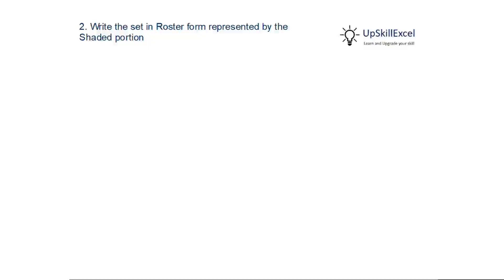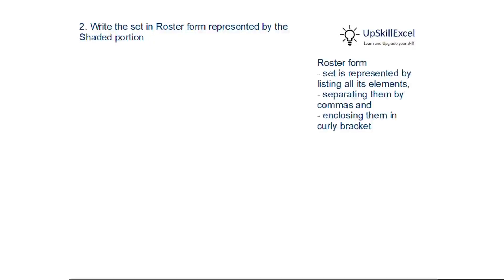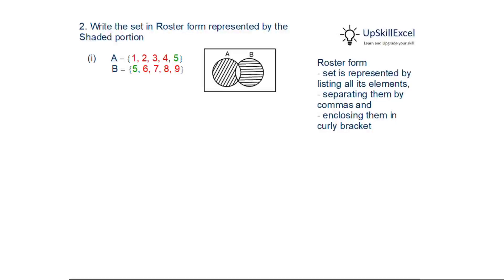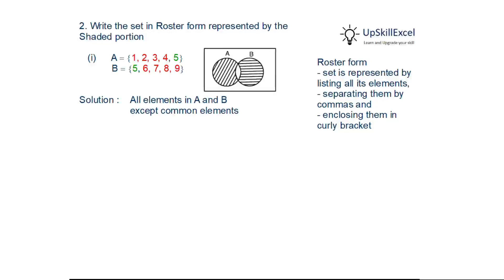Write the set in roster form represented by the shaded portion. In roster form, we list all elements separated by commas and enclosed in curly brackets. The shaded area is represented by A and B except the intersection. Here A is {1,2,3,4,5} and B is {5,6,7,8}, and the common element is 5, so the answer is all elements in A and B except the common element 5.